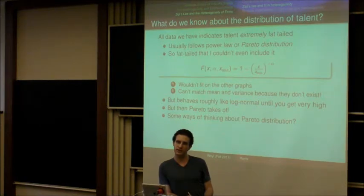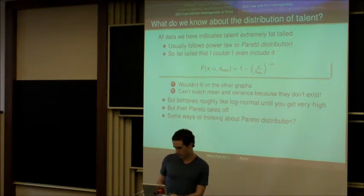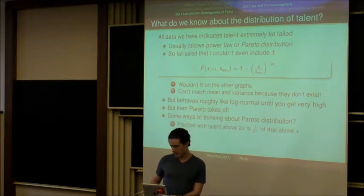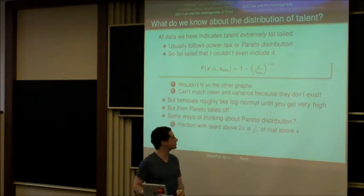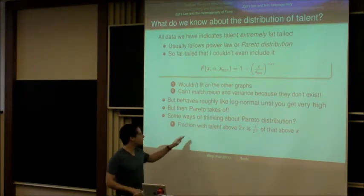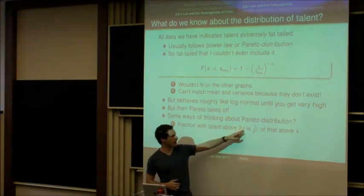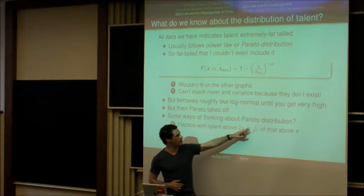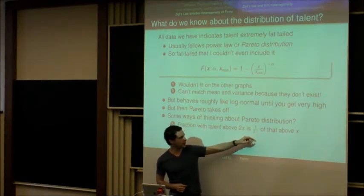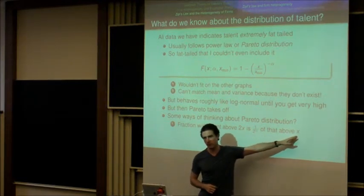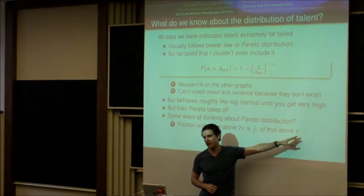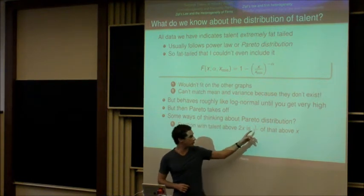The basic idea is that the fraction of people with talent greater than 2x is 1 over 2 to the alpha times the fraction of people with talent above x.